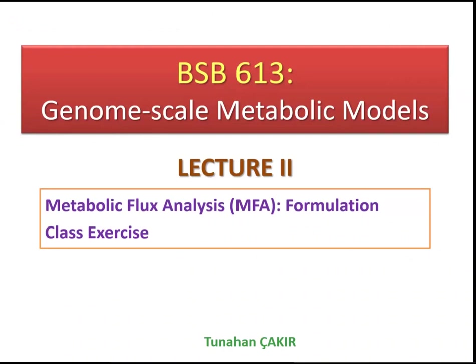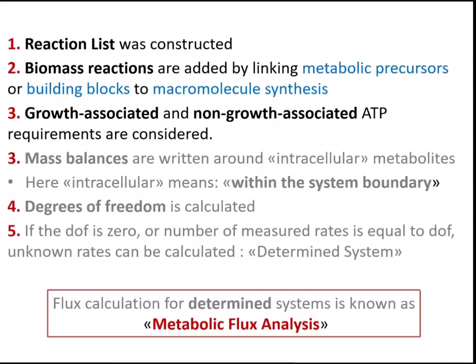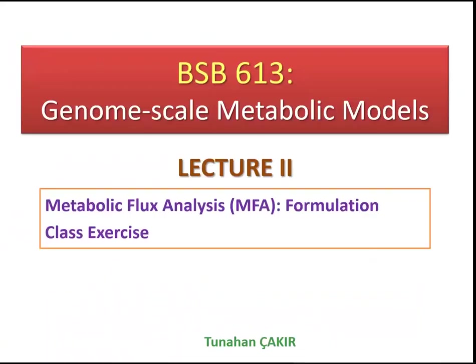We have already talked about the steps required to perform the modeling of metabolism based on metabolic networks. We said that we should construct a reaction list first. And if you want to do a genome scale modeling, we should link those reactions with the genes that control their enzymes — the enzymes that catalyze those reactions. We should add a biomass reaction to this reaction list, and also consider growth associated and non-growth associated ATP requirements. This is what we covered last week.